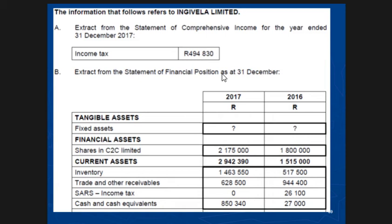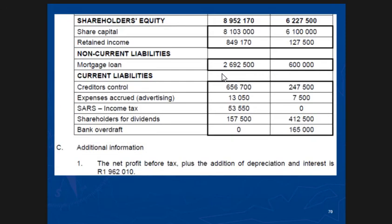All right guys, let's do note number one quickly. In that paper, guys, they didn't ask for it specifically, but they asked for it in 3.2 — look at 3.2, that's what they're simply asking you to do. They're simply asking you to compare note number one: the calculated cash generated from operations. It's very easy. It is just profit before tax and an adjustment — then you add depreciation, you add interest expense, and then you will get profit before cash generated from operations.